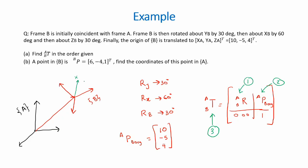It shows a point defined in frame B with coordinates 6, minus 4, and 1 as is given by the position vector PB. We would like to express this in terms of frame A which would give us the position vector PA.